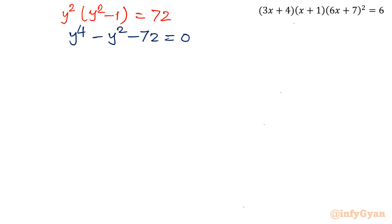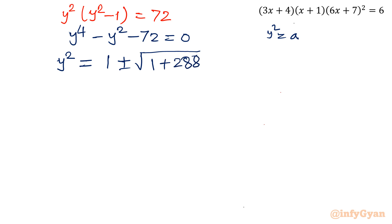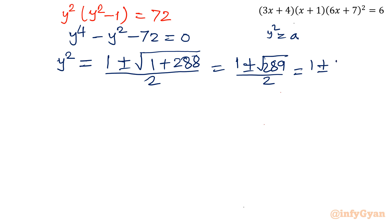Applying the quadratic formula directly for y², we get y² = [1 ± √(1 + 288)] / 2 = [1 ± √289] / 2 = [1 ± 17] / 2. Taking the plus value: y² = 18/2 = 9. Taking the minus value: y² = −16/2 = −8.